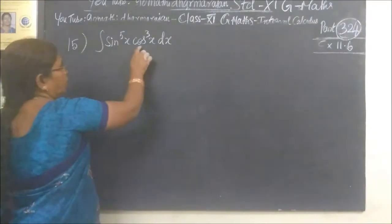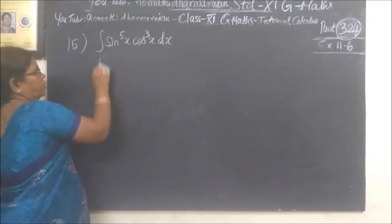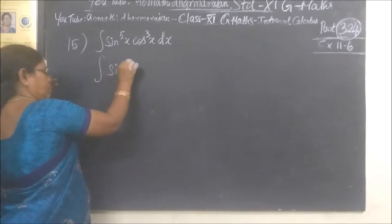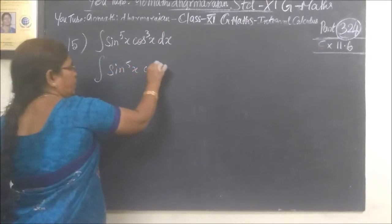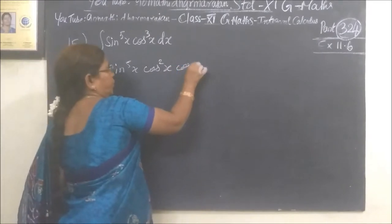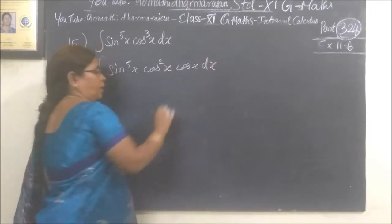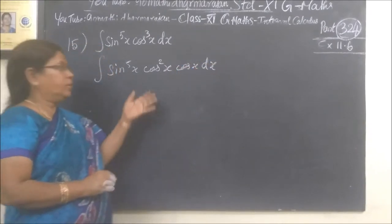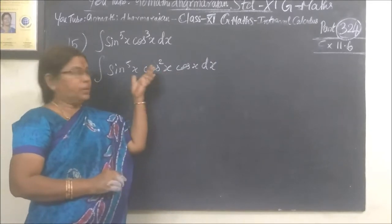This one we can change to cos cube. We are going to pull the cos squared x and cos x. We need to make a difference. How do you create a difference? Where do you use the identity?